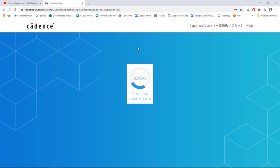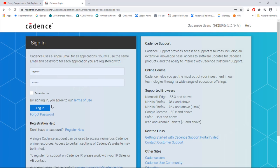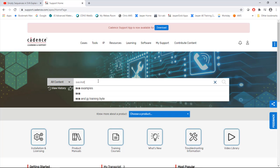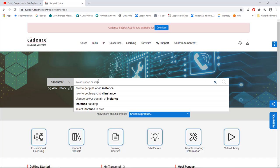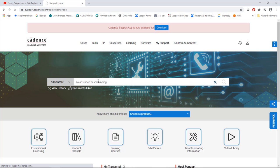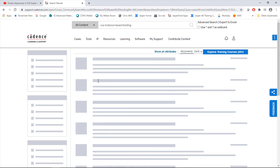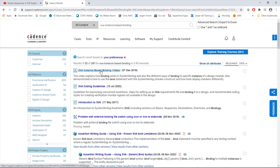Alternatively you can go on the Cadence website at support.cadence.com. So registration is simple. All you need is an email address from a company who is a Cadence customer. No more than that. And again just search for SVA instance based binding. And it will be the top hit.